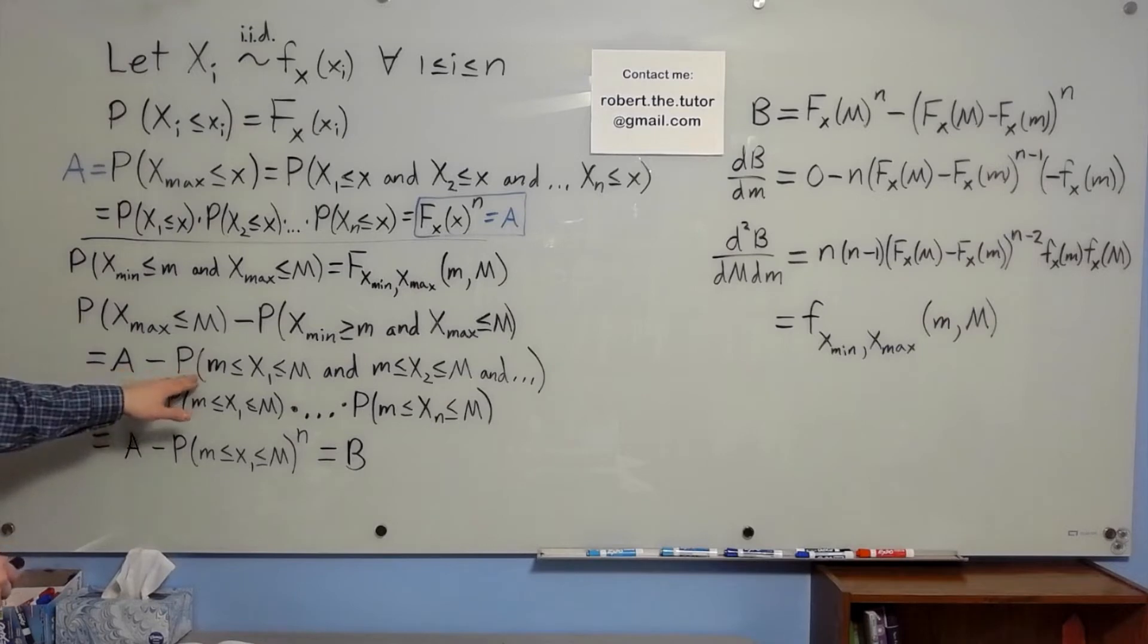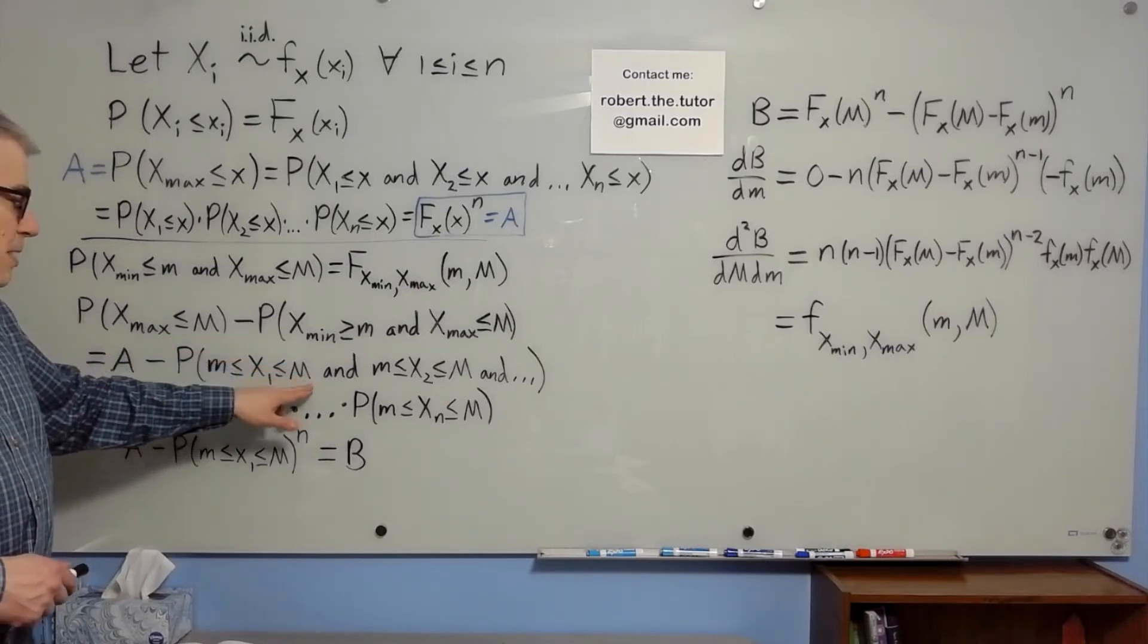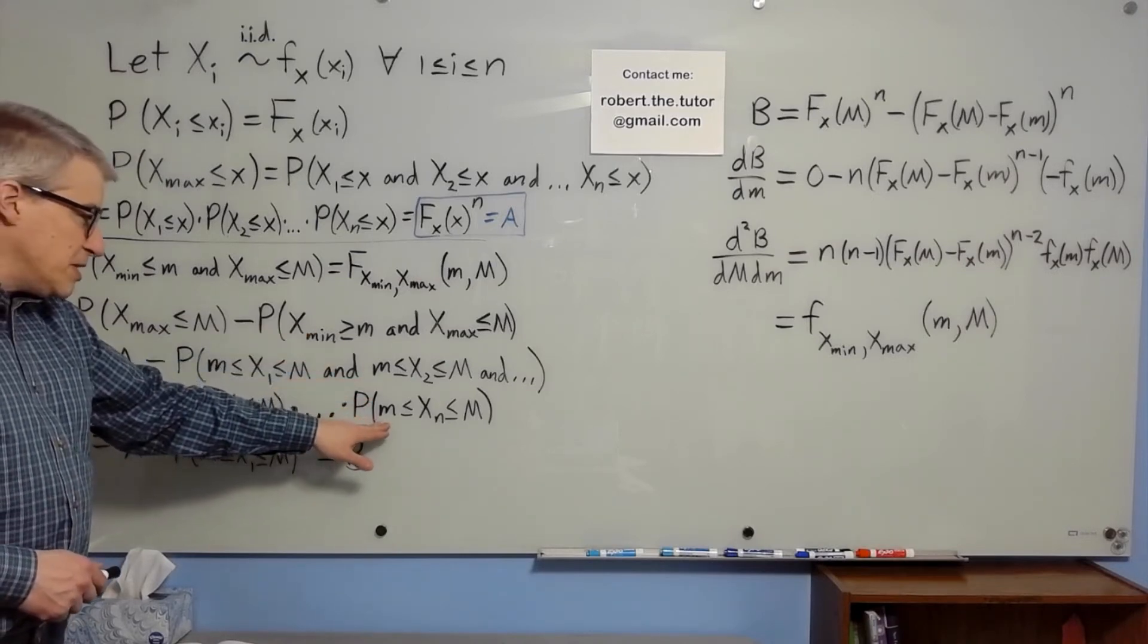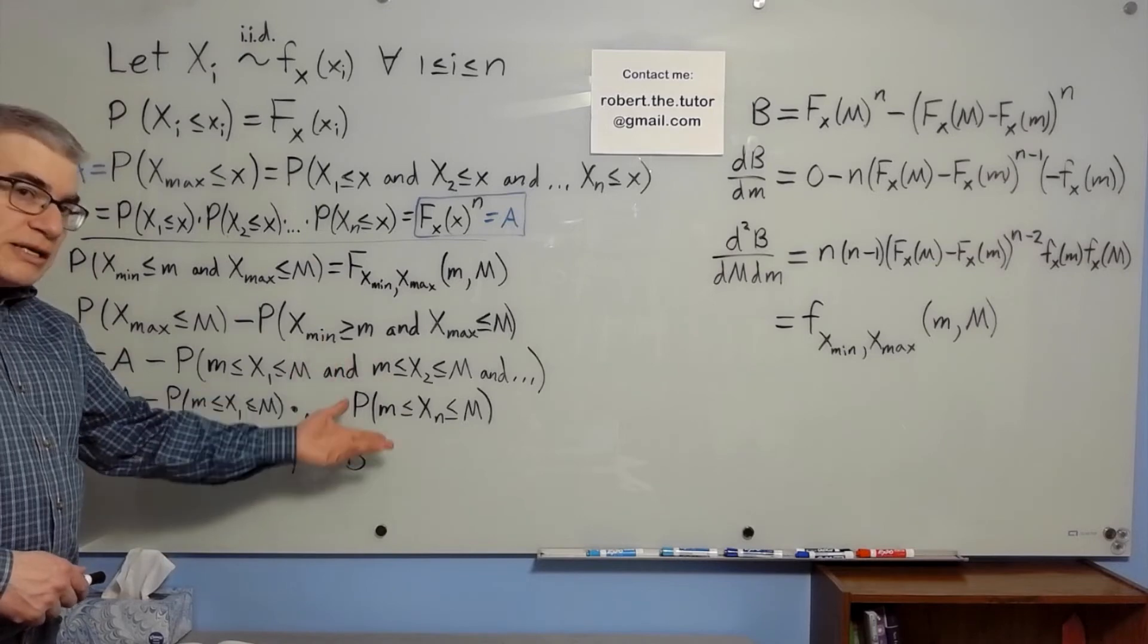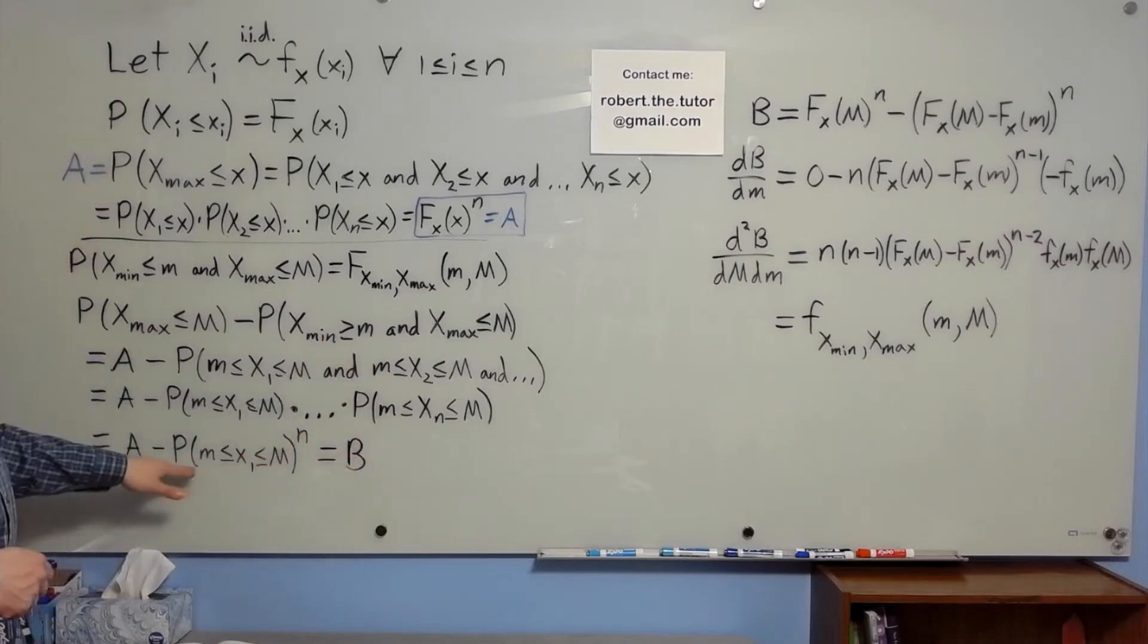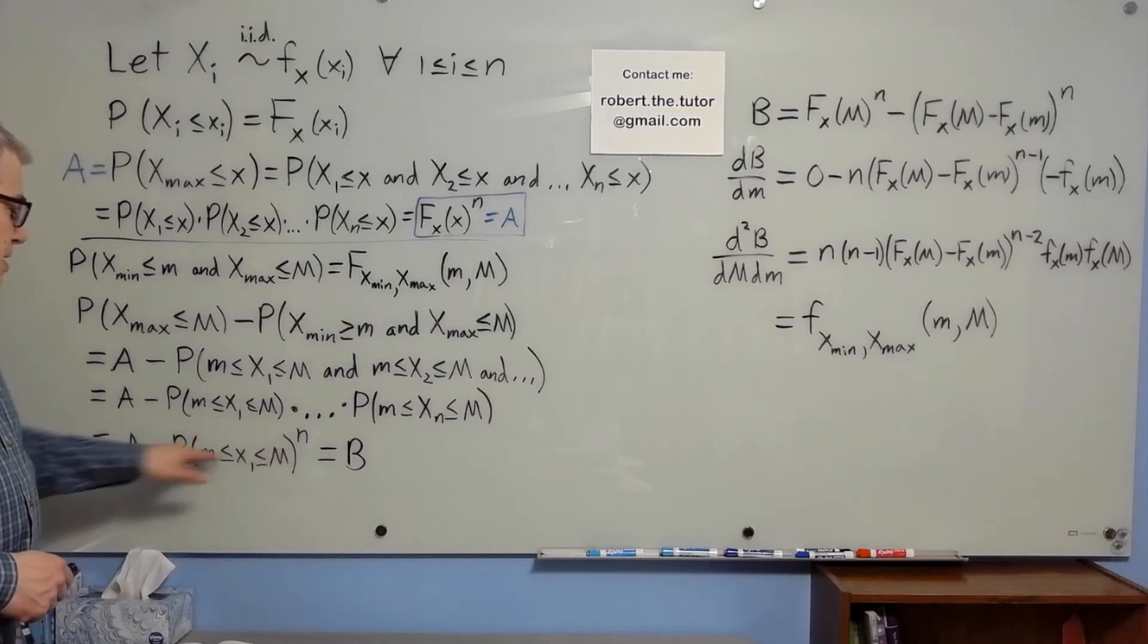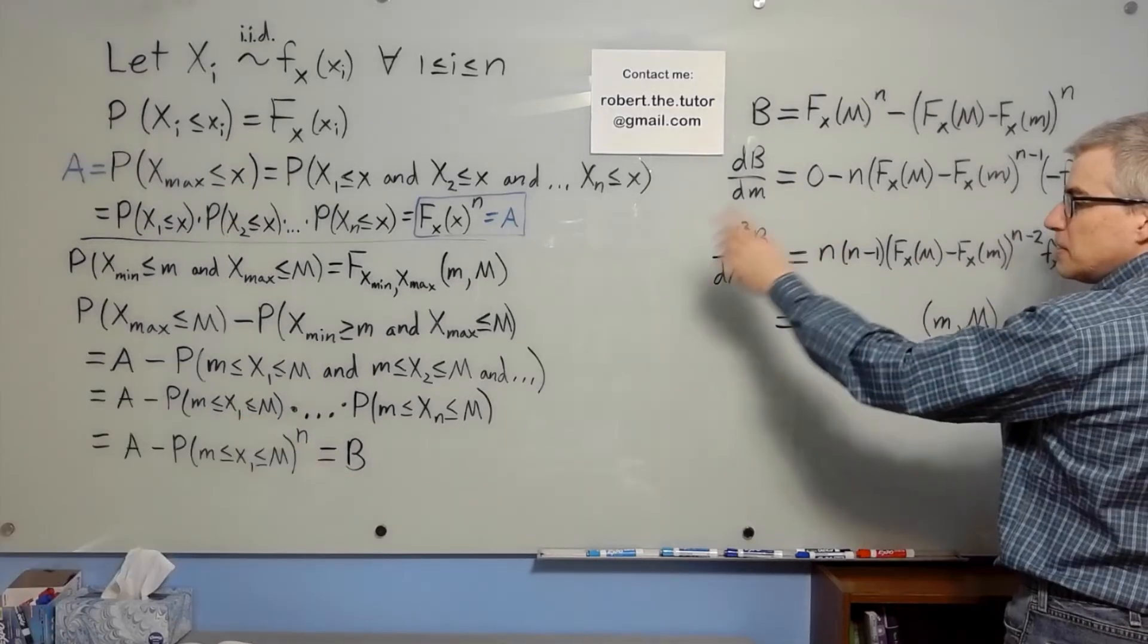we have A minus the probability that each of the x's is between little m and big M. They're independent again, so it becomes the product of the probabilities. They're all identically distributed, so it becomes the probability that little m is less than or equal to x is less than or equal to big M to the nth power. A minus that is B.